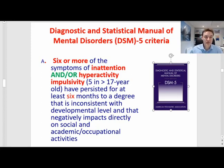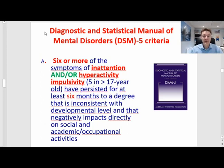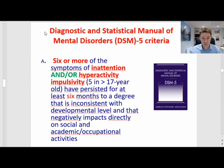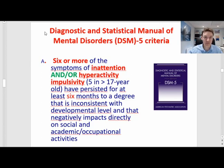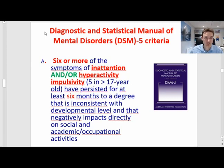These symptoms also need to have persisted for at least six months. Why at least six months? This is to indicate that ADHD tends to be quite a long-lasting condition. There are situations where, following the loss of somebody in the family or a traumatic event, children may display problems of attention and concentration, but this is not ADHD — it is due to a reaction to the traumatic event, which oftentimes is temporary. ADHD tends to be a long-lasting condition, and the six-month limit was a convention to indicate it needs to last for a certain amount of time.